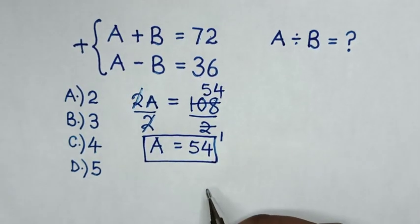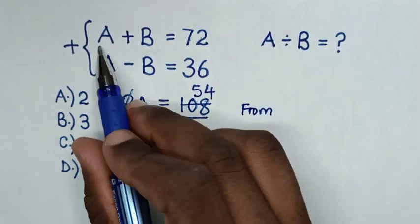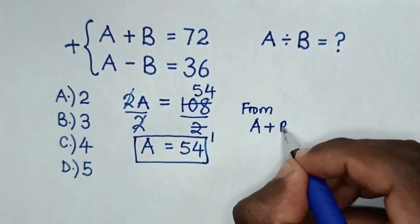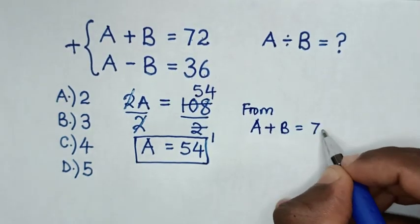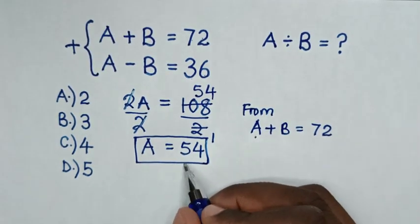Now, to find the value of B, from this first equation, which is A plus B is equal to 72. But, we already got the value of A, which is 54.